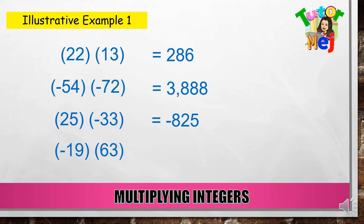Negative 19 times positive 63. So negative times positive — magkaiba sila, so ito ay negative. Then multiply 19 and 63, so we have negative 1,197.